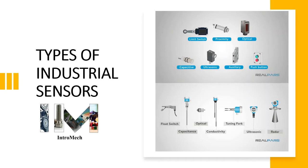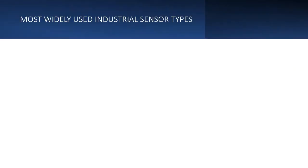Today we are going to see what the different industrial sensors are. Sensors play a very important role in any automated system, and there are a lot of types of sensors available in the market. Today we will see what are the most widely used sensors in the industry.